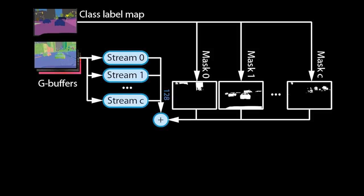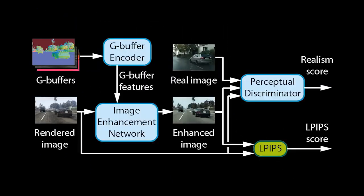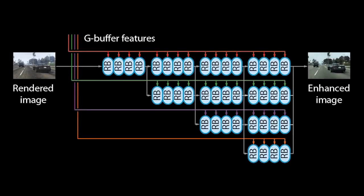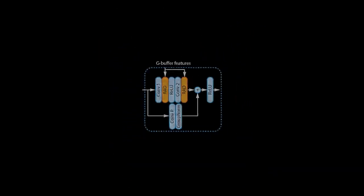The resulting feature tensors are further processed by residual blocks, which output tensors at multiple scales. The Enhancement Network is based on HRNet, which processes images at multiple scales in parallel. Each scale of the feature tensors matches a scale in the network. The network consists of many residual blocks at each scale. Within the residual blocks, we replace the batch normalization layers with our own Rendering Aware Denormalization Blocks, or RAD for short. The RAD layers modulate features based on the rendering information in the G-buffer feature tensors. For more details, we refer to our paper.